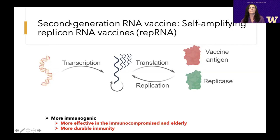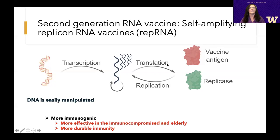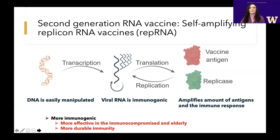Our particular RNA vaccine approach differs from Pfizer's and Moderna's — it's called a self-amplifying replicating RNA vaccine. When it gets into the cell, it produces a replicase, and that replicase instructs the RNA to replicate itself. So we get multiple copies of the RNA within the cell. More copies of RNA makes more vaccine antigen, and more vaccine antigen means a stronger immune response. We anticipate this vaccine will be much more immunogenic than Pfizer's or Moderna's because of its ability to copy itself multiple times.